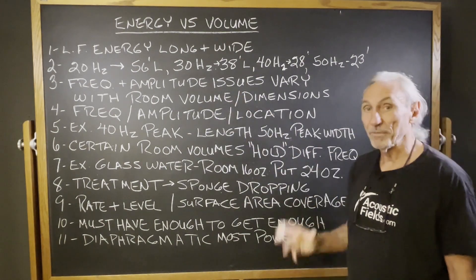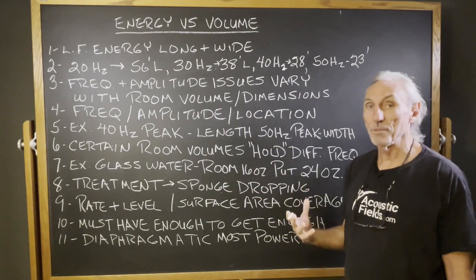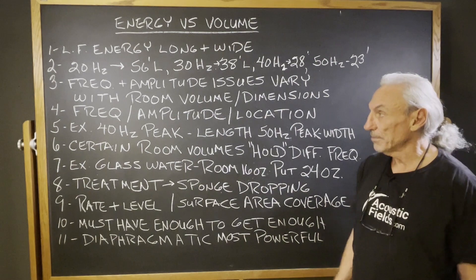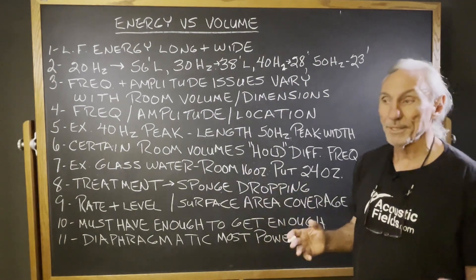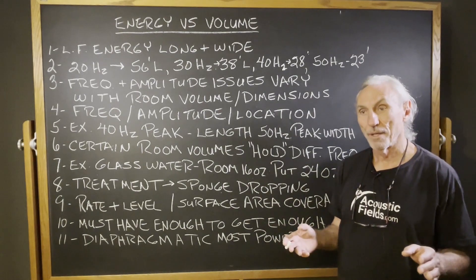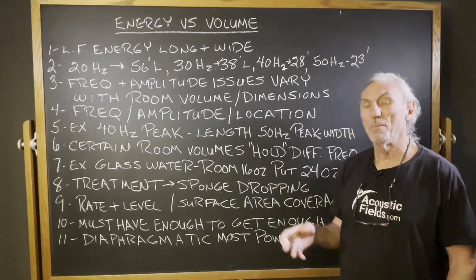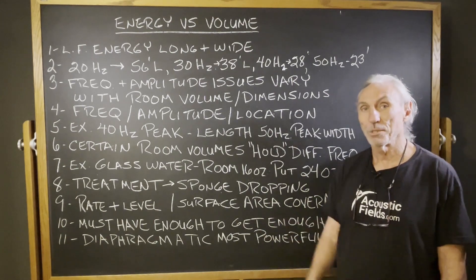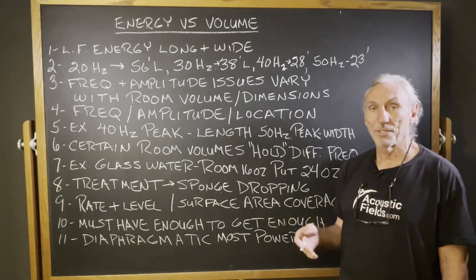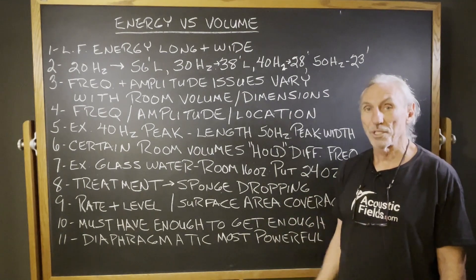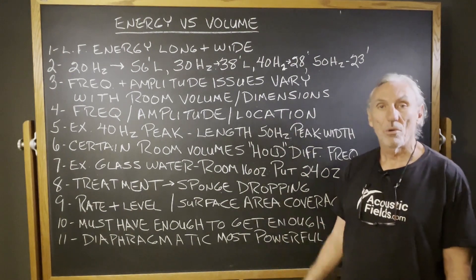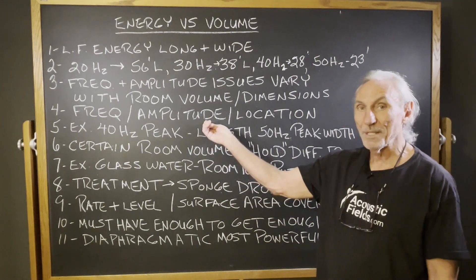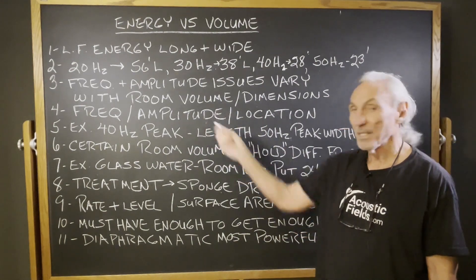Frequency and amplitude issues vary with the volume of the room. The amplitude of the problem is directly related to the volume of the room — so how much energy will fit into the room? A good way to think about your room is as a 16-ounce glass of water. When you put two speakers in the room, you're almost automatically putting in about 24 ounces of fluid into a 16-ounce glass. That eight ounces over the 16 is going to spill out — that's distortion, room modes, reverberation times, and a whole host of other issues. So we want to choose ratios that minimize the strength of those issues, because it's the strength that determines how much treatment we have to have.